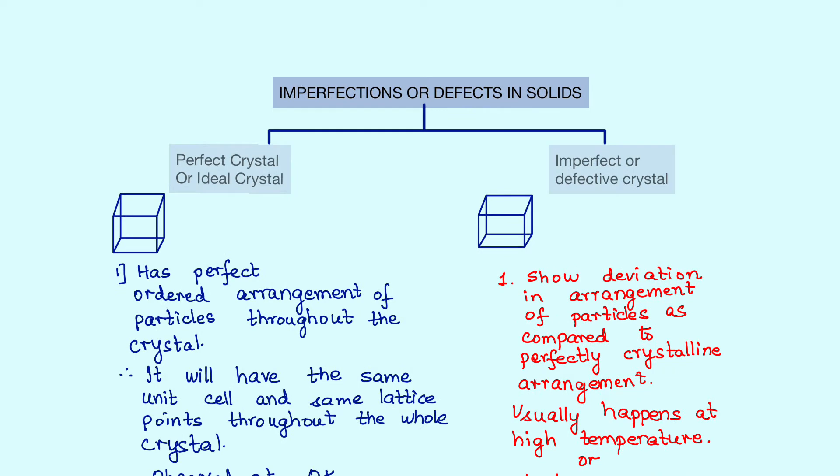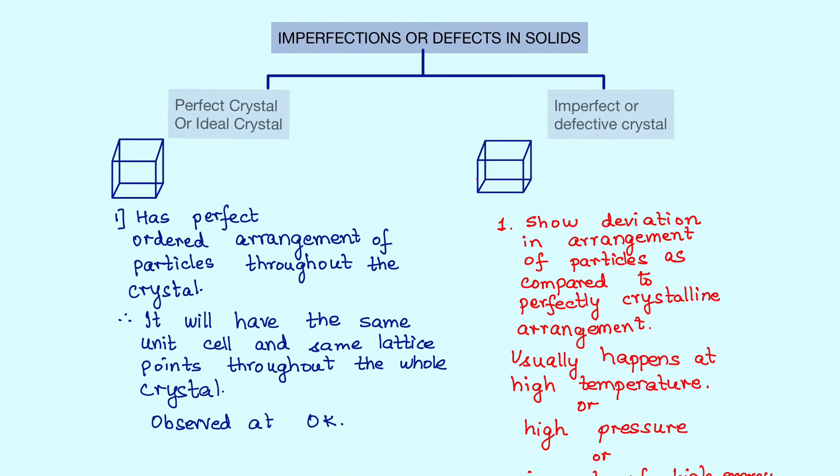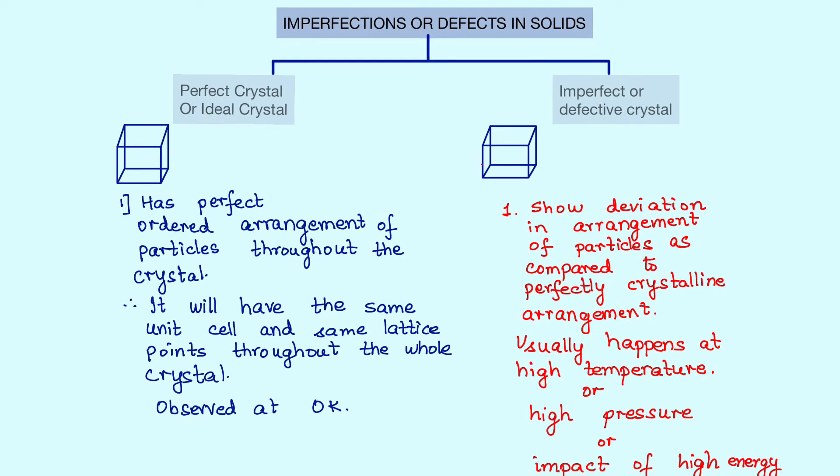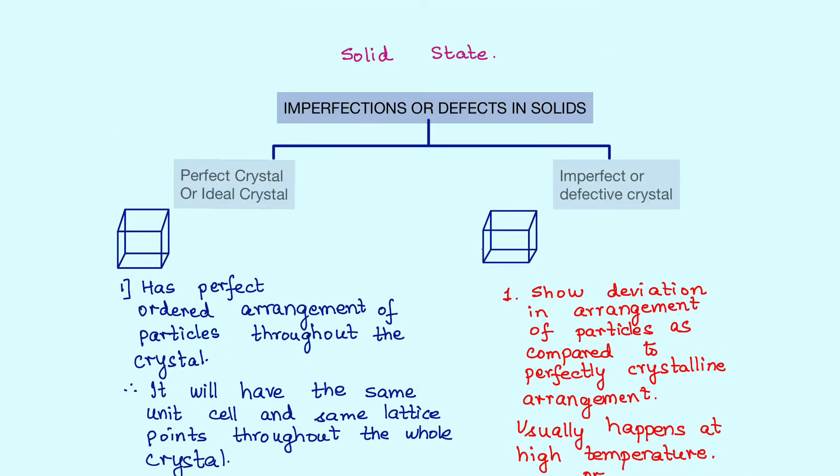Under solid state, we are specifically going to start with the imperfections or defects in the case of solids. You will see notes scrolling up on your screen. Please feel free to take either screenshots or write these notes down. They will be very helpful when you are not on YouTube. In case you are not able to do either of them, please visit the site pen and paper Google site where you will find these notes in the form of PDFs. So let's get started with the topic solid state, imperfections or defects in solids.